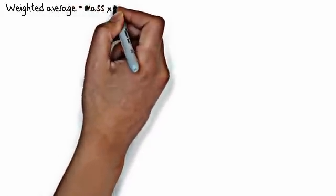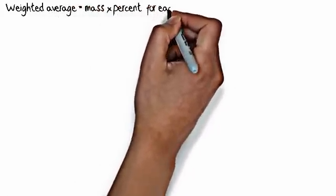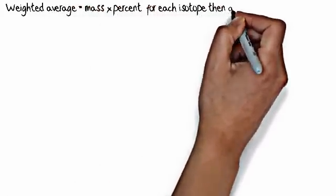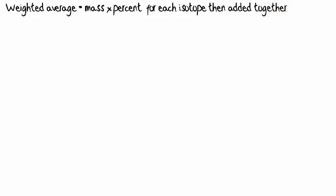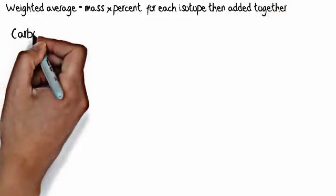A weighted average is the mass times the percent for each isotope, then adding those numbers together.